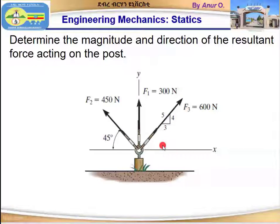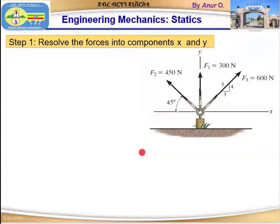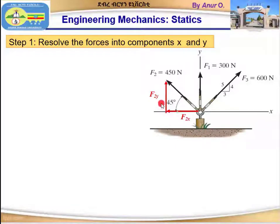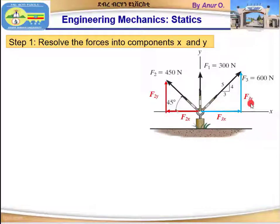We are asked to determine the magnitude and direction of the resultant force acting on the post. The first step is to resolve each force into its x and y components. Resolving F2: F2x is the horizontal component and F2y is the vertical component. F3x is the horizontal component of F3 and F3y is the vertical component. Remember, F1 is a vertical force, so its x-component is zero — we only have a y-component of 300 newtons.